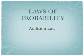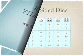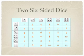The topic is the Addition Law of Probability. Now imagine you have two six-sided dice. There are 36 total possibilities.